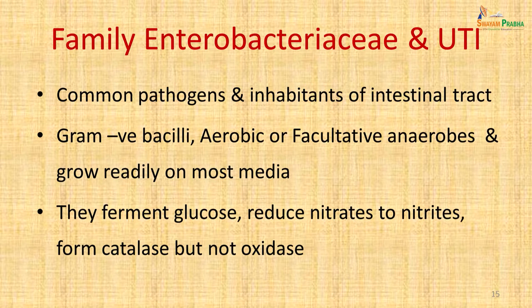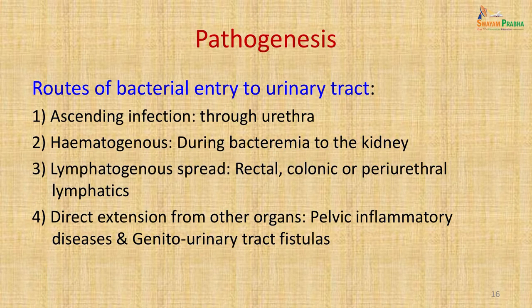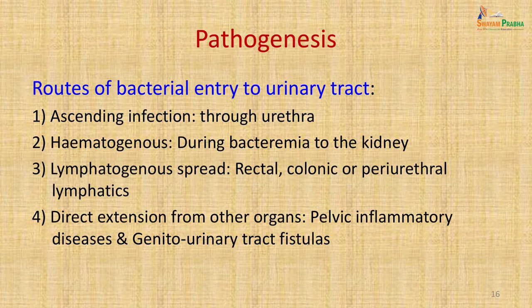Enterobacteriaceae all ferment glucose with or without production of gas, reduce nitrates to nitrites, form catalase but do not form oxidase. Bacteria enter the urinary tract by various routes: ascending infection through the urethra, bloodstream infection or bacteremia directly to the kidney — Staphylococcus aureus more commonly enters via the bloodstream — lymphatogenous spread from rectal, colonic or periurethral lymphatics, or direct extension from nearby organs via pelvic inflammatory disease or a genitourinary fistula.